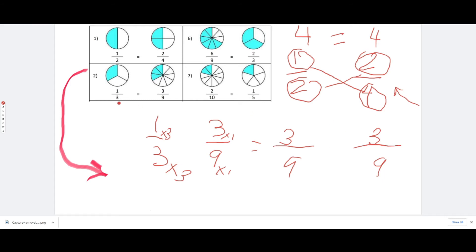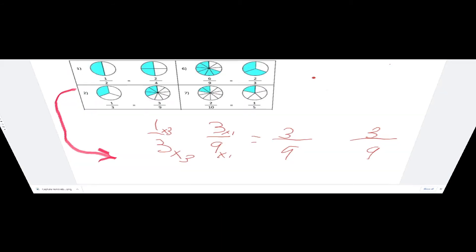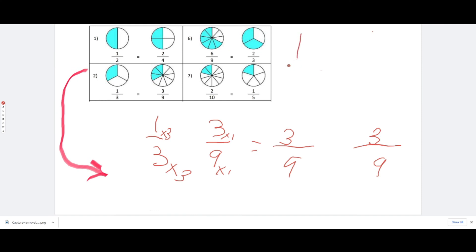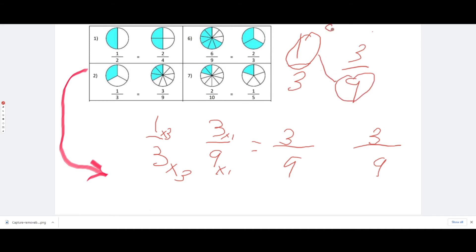Now let's use cross multiplication for one third and three ninths. One times nine is equal to nine, and three times three is equal to nine. We have the same product on both sides, which means they are equivalent fractions.